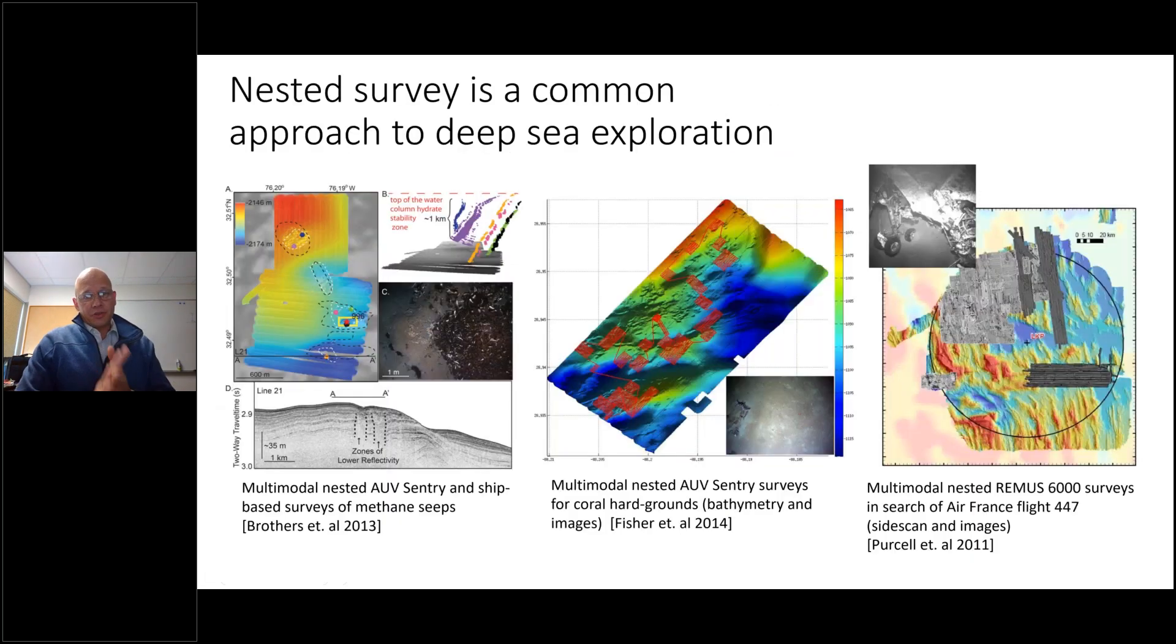I talked about the hydrothermal use case, but nested survey is much more general and applies in a lot of use cases in the deep sea. On the left is multimodal nested survey from both the ship and AUV Sentry looking for methane seeps along the eastern seaboard. In the middle, multimodal AUV surveys in the context of the Deepwater Horizon disaster, searching for coral hardgrounds using bathymetry and side scan followed up by photo surveys. And on the right, multimodal nested survey looking for the Air France Flight 447 crash site using multi-resolution side scan followed up by images for confirmation of the aircraft's location.